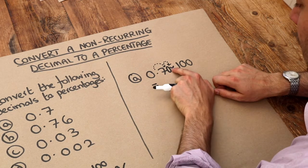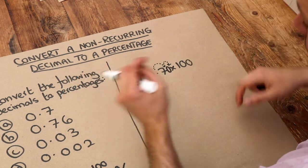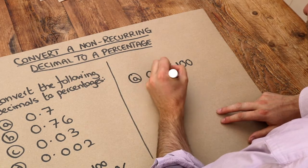So now the decimal point is on the end of the zero there, and we've got 70 point. Now that's just 70, isn't it? So we'll have 70%.